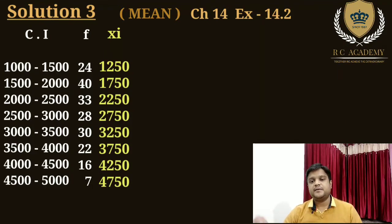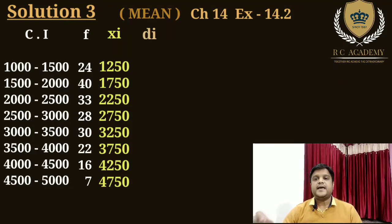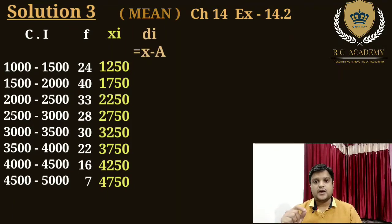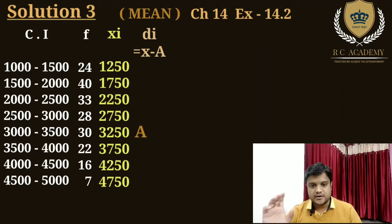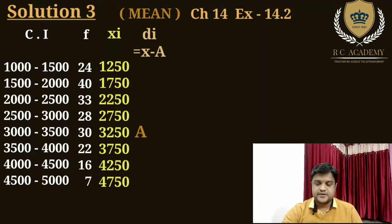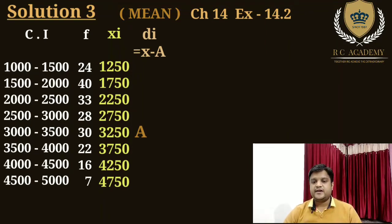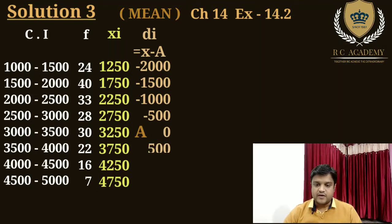xi nikaalene ke baad hum di nikaalenge. di = xi - a. 'a' hum xi mein se assume karenge — is question ke liye hum 3250 assume karte hain. Toh di values hongi: -2000, -1500, -1000, -500, 0, 500, 1000, 1500.